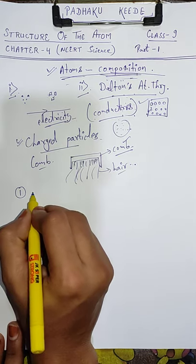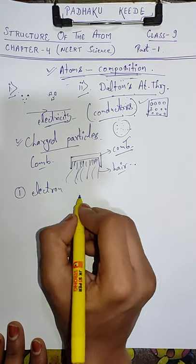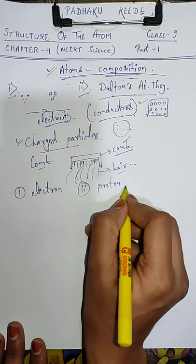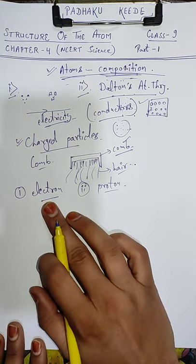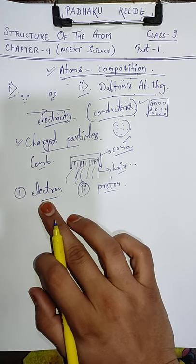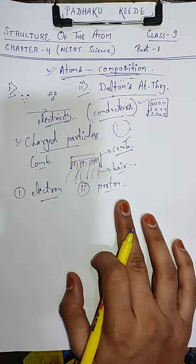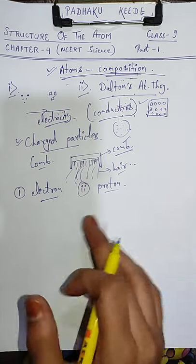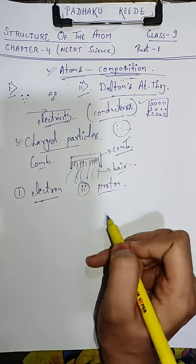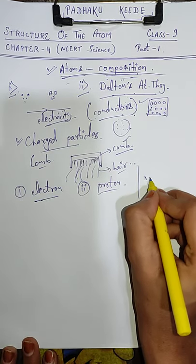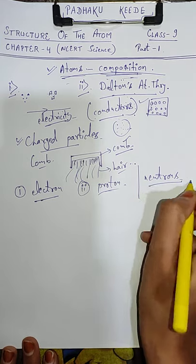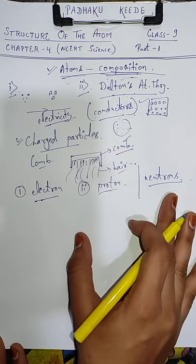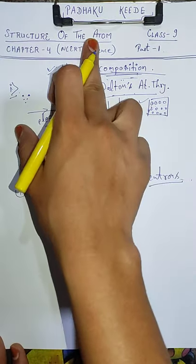Ab hum dekhenge ki matter ke andar charged particles kaun kaun se hain. Number one aayega hamare paas electron, phir hum padhenge proton ke baare mein. Electron ki discovery wale scientist alag hain, proton humay jis scientist ne diya woh alag hain. Alag-alag samay pe different experiments hote rahe. Aur humay electrons, protons, aur uske baad neutrons bhi dekhne ko mile hain.